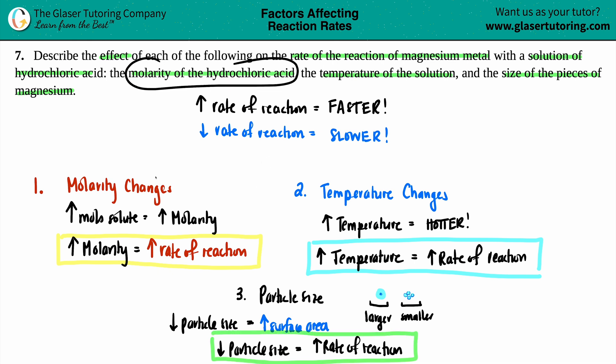Let me summarize with all the colors. Molarity changes, molarity of the hydrochloric acid in this specific case. If you increase that molarity of the hydrochloric acid, the rate will increase. It will be faster. Temperature of the solution. If you jack up that temperature, if you make it higher, the rate of the reaction will also increase. And that means that it's going to be faster, less time for that reaction to happen. And the size of the pieces of the magnesium. If you have a smaller amount of magnesium, smaller particle size, that rate of reaction will increase and that's going to be faster.